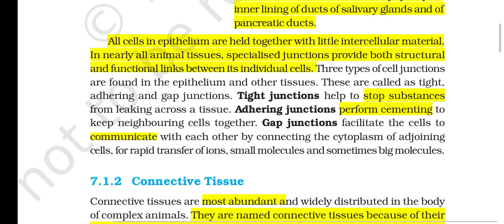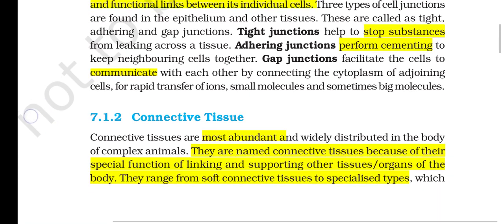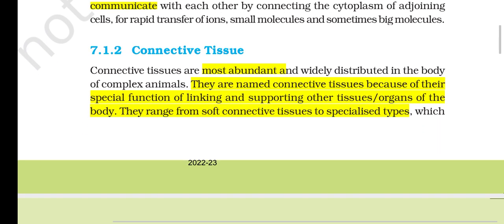All cells in epithelium are held together with little intercellular material. Specialized junctions provide both structural and functional links between individual cells. Three types of cell junctions are found in epithelium and other tissues: tight junctions, adhering junctions and gap junctions. Tight junctions help stop substances from leaking across a tissue. Adhering junctions perform cementing to keep neighboring cells together. Gap junctions facilitate communication between cells by connecting the cytoplasm of adjoining cells for rapid transfer of ions, small molecules and sometimes large molecules.